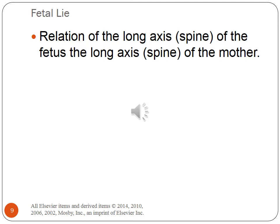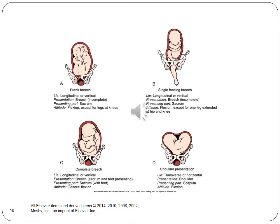Fetal lie is the relation of the long axis — the spine — of the fetus to the long axis, or spine, of the mother. There are two primary lies: longitudinal and transverse. Transverse, horizontal, or oblique means the long axis of the fetus is at a right angle or diagonal to the long axis of the mother. Vaginal birth cannot occur if the fetus stays in a transverse lie. Oblique lie is less common and usually converts to a longitudinal lie during labor. Please go to page 343 in your text. This picture depicts different presentations for birth.